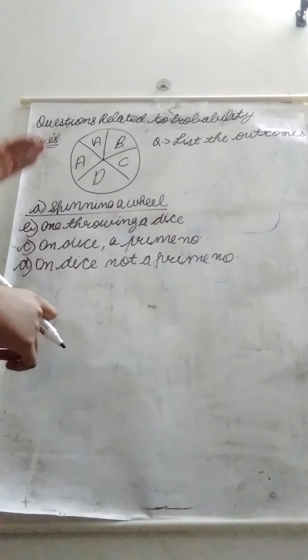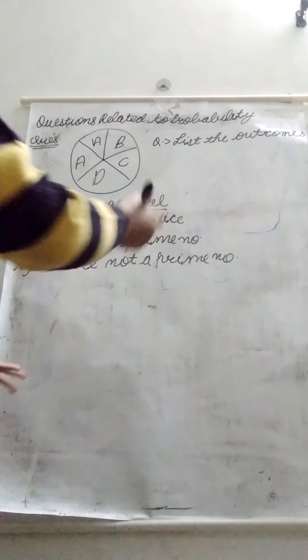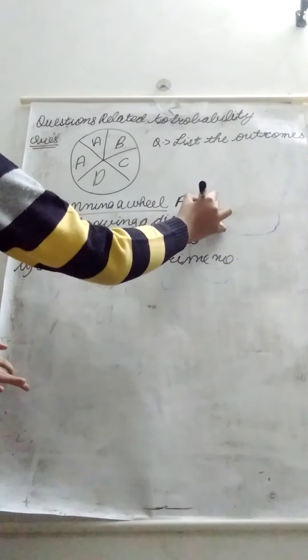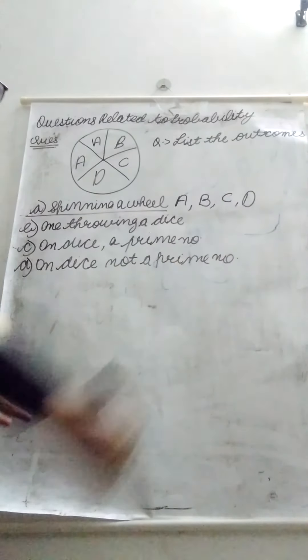So let's see here two times A, B, C, D. So A will come, then B will come, C will come, and D will come.